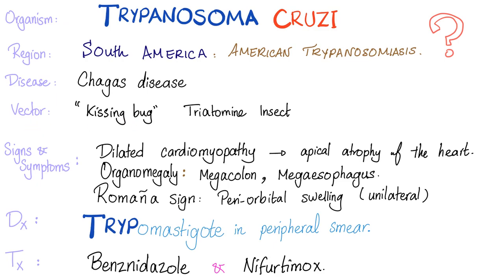What's the vector? The kissing bug — though this is not the technical term. The scientific term is the triatomine insect.